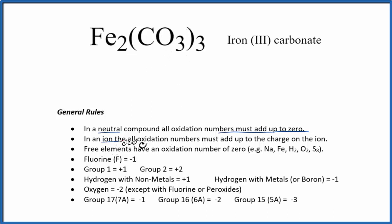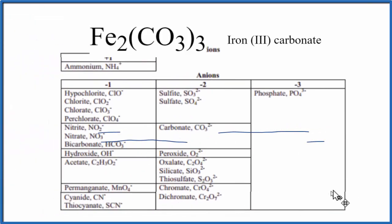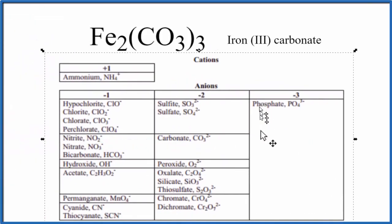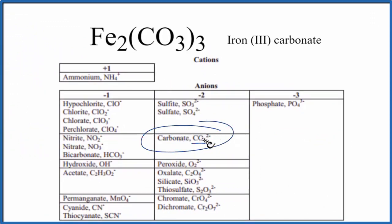Because with ions, the oxidation numbers add up to the charge on the ion. Let's bring over our polyatomic ion table. We're looking for carbonate, which is right here: CO3, 2 minus.